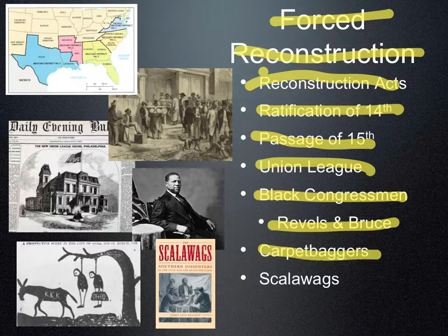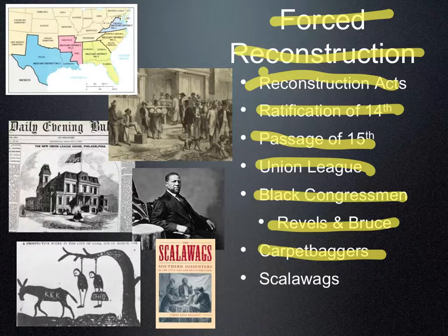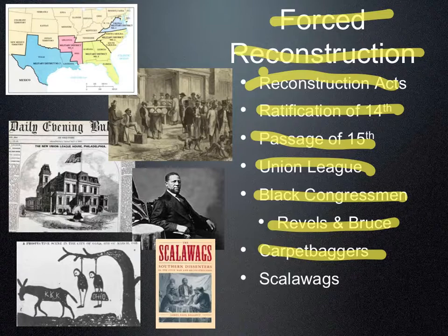To finish up, there are two groups of people we need to talk about. First are carpetbaggers — northerners who go south looking for government jobs. As new state governments get elected in the South, they're not going to put Southerners into government jobs; they want to put northerners in those jobs. These aren't rich people — usually poor or middle-class northerners looking for better work. They pack everything into old suitcases made of carpet scraps, which is why they're called carpetbaggers. They head south to take government jobs and essentially tell Southerners how to live their lives.